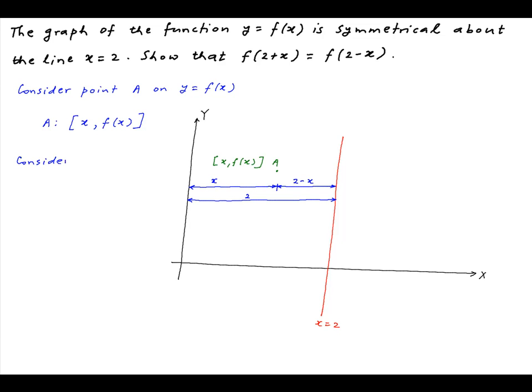Now let's consider another point B also on the curve y = f(x). Let's assume that the coordinates of B are (x', f(x')), so we put this on the Cartesian plane. Now the distance of B measured horizontally from the line x = 2 is x' - 2.